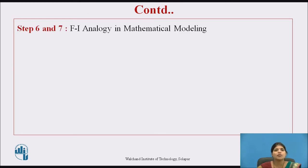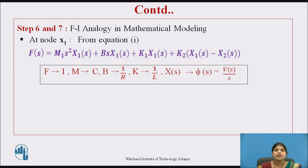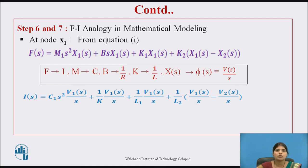Steps 6 and 7: force current analogy in mathematical modeling. At node X1, from Equation 1, in force current analogy: force is replaced by I, M by C, B by 1/R, K by 1/L, and X(S) by V(S)/S. The equation becomes: I(S) = C1·S²·V1(S)/S + (1/R)·V1(S)/S + (1/L2)·(V1(S)/S − V2(S)/S). After simplification, this is Equation 5.